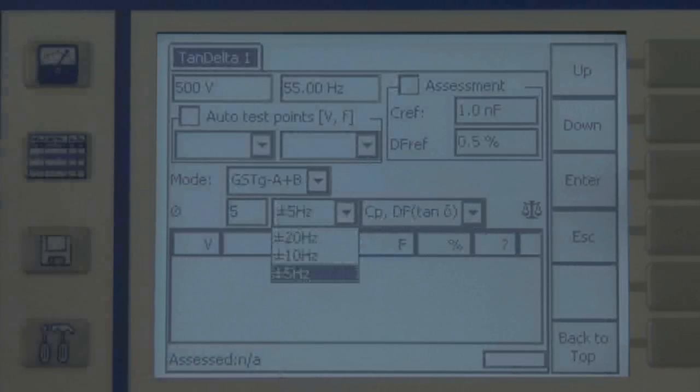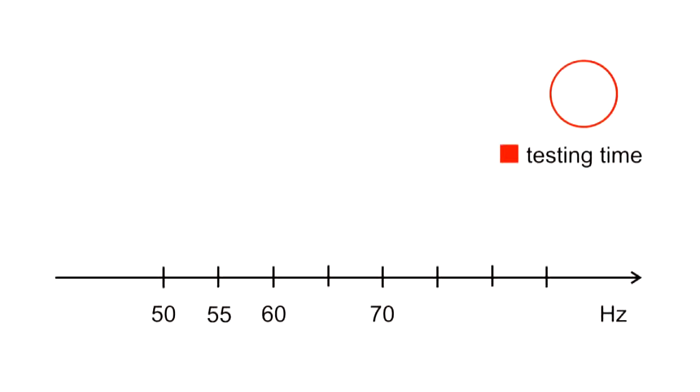Measurement bandwidths from 5 Hz up to 20 Hz are possible, allowing for better filtering of interference and faster measurements.